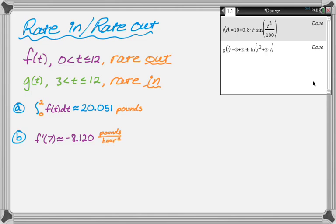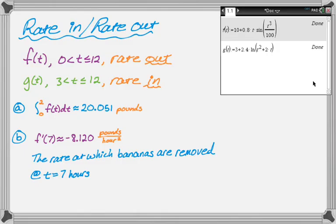And now we have to interpret this in the context of the problem or explain the meaning. So f of t is the rate at which bananas are removed. So I'm going to say that the rate at which bananas are removed at exactly t equals 7 hours after the store opens is decreasing, because f prime of 7 is negative. And then I'm just going to say by 8.120 pounds per hour squared. I just kind of read what the function is telling me and then write down the answer in the context of the problem. I always feel like I'm not doing a good job grammatically when I answer those questions, but it doesn't really matter because that's an answer that gets credit.